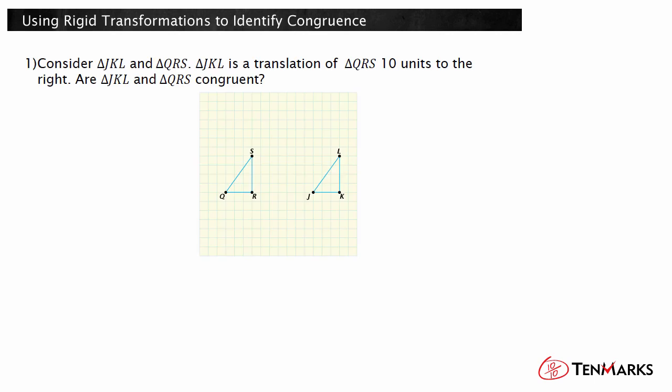Consider triangle JKL and triangle QRS. Triangle JKL is a translation of triangle QRS ten units to the right. Are triangle JKL and triangle QRS congruent?